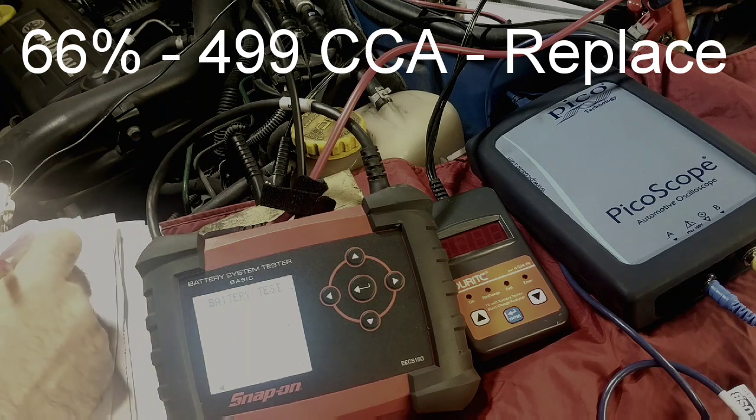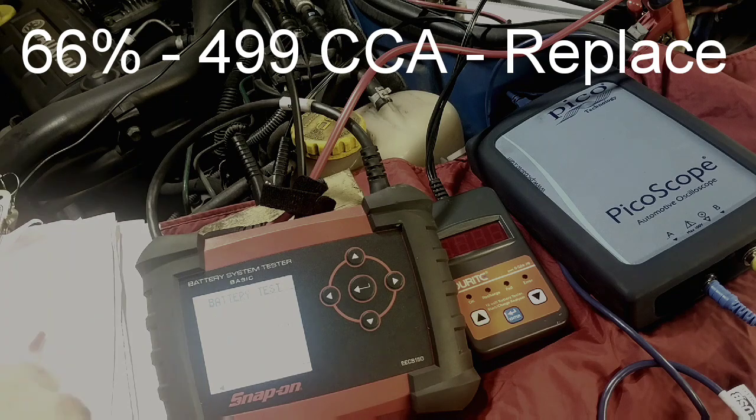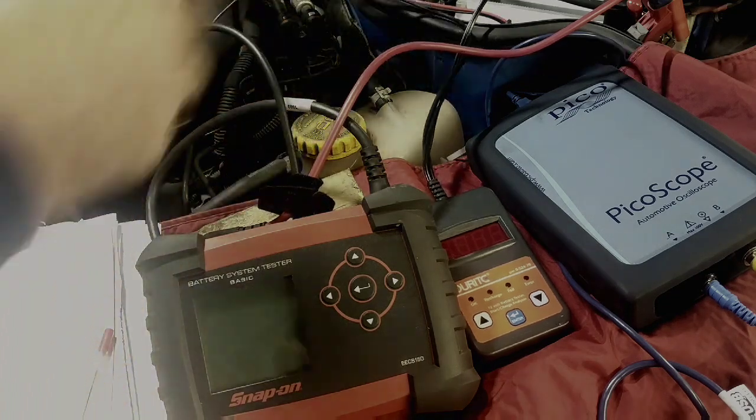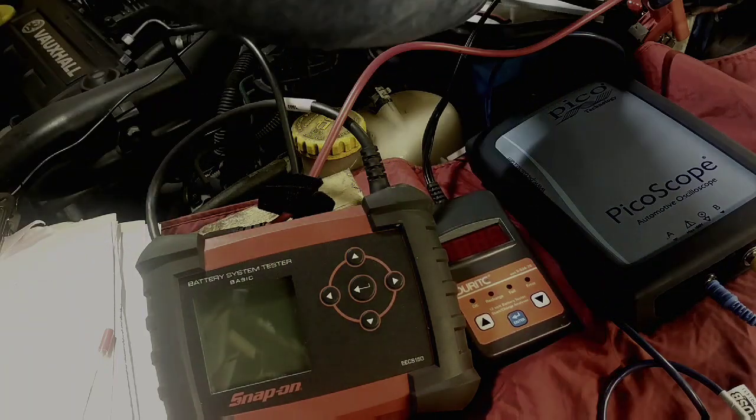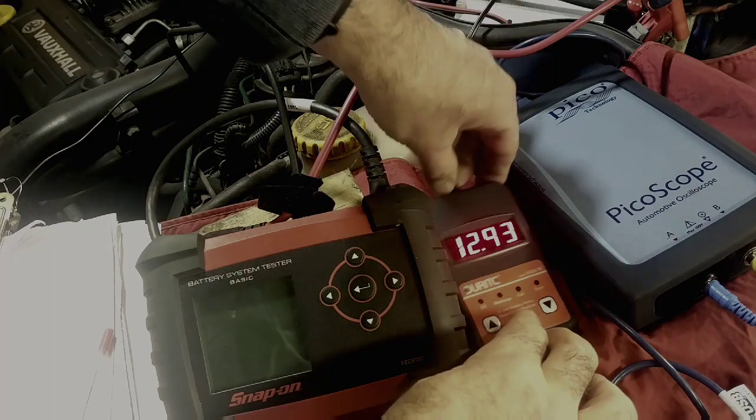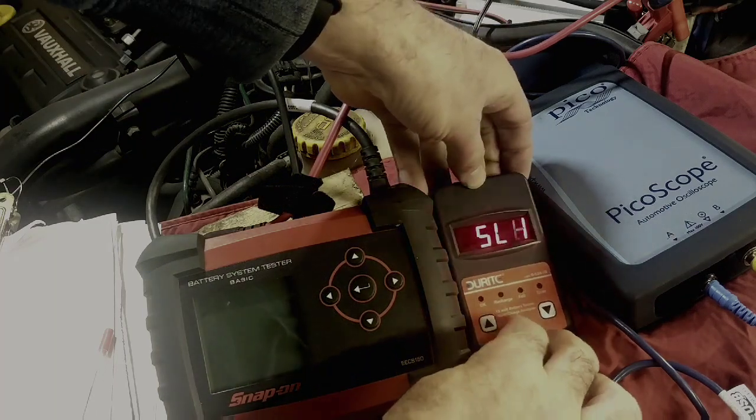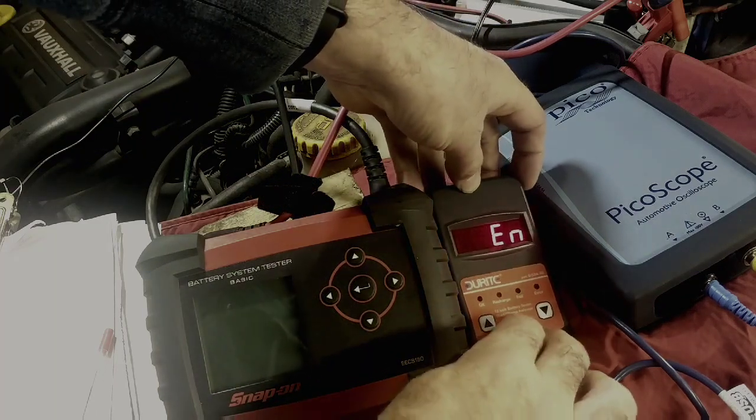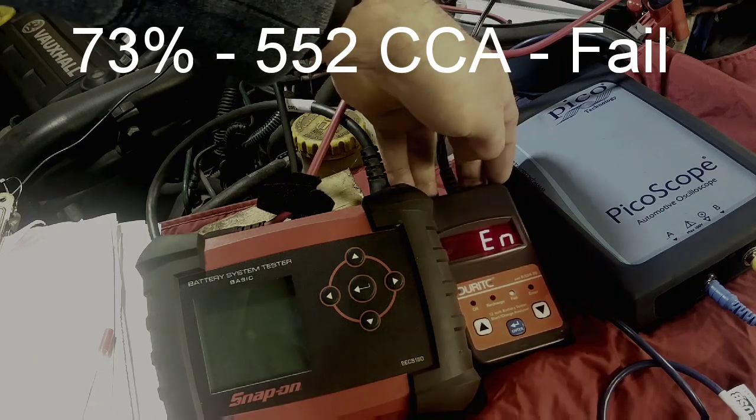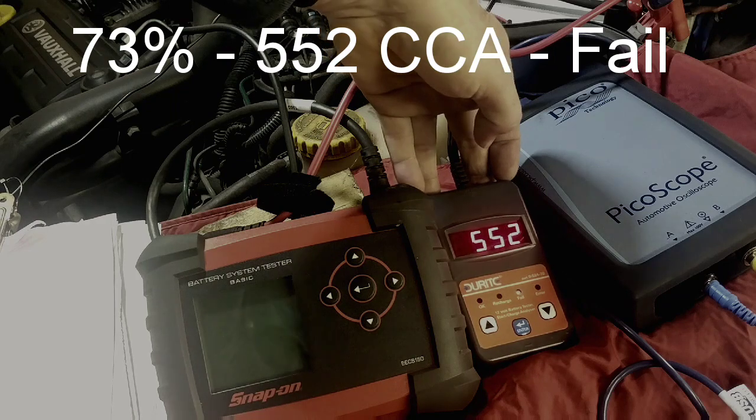Okay, move on to the little Durite. Same with this. Battery standard lead acid, EN, 750 cold cranking amps. And that's come up fail, 552.